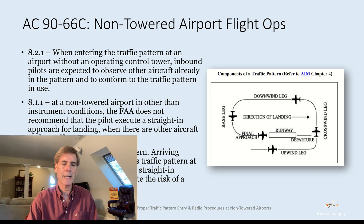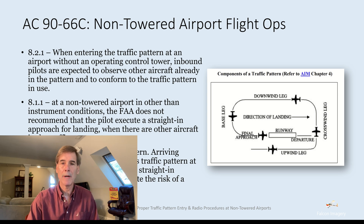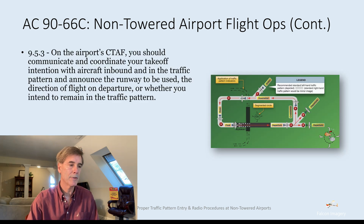Notice in the diagram the legs of the pattern. Frequently I hear people say they're on the upwind leg when they're really on the departure leg. We have a departure leg, crosswind leg, downwind leg, base leg, and then the upwind leg off to the side. If you're doing a go-around because there's traffic on the runway, you're going to sidestep to the right and be on the upwind leg.